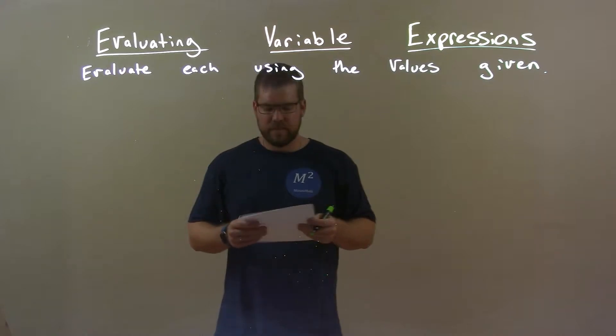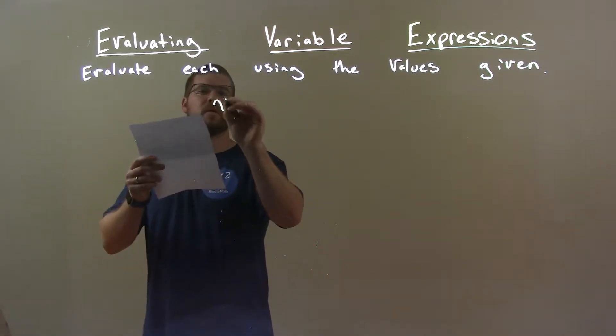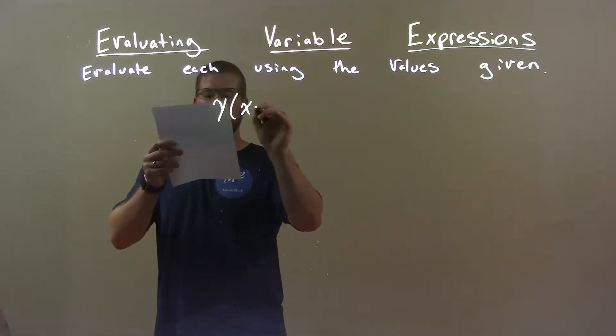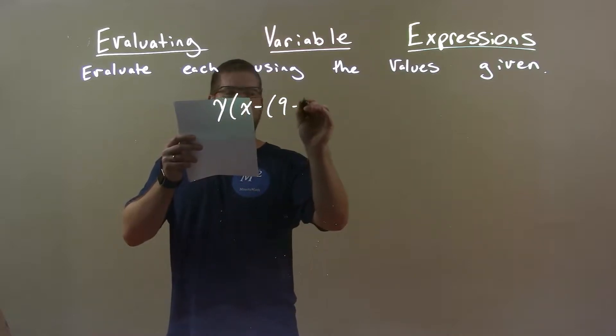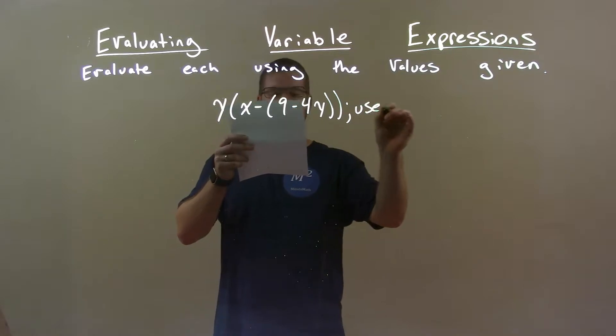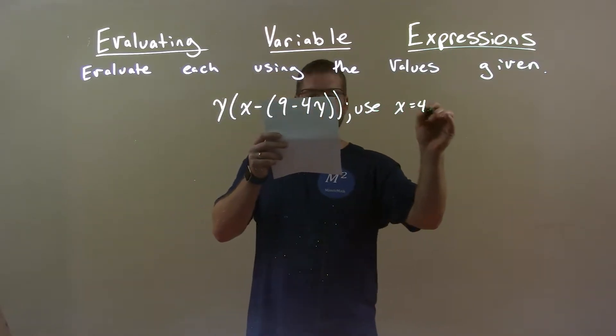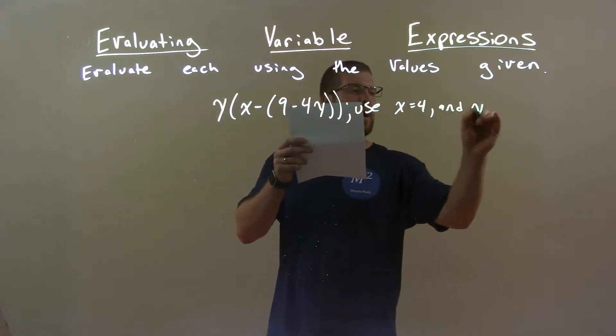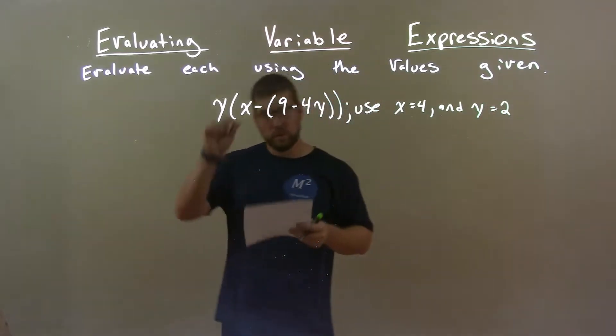So if I was given this expression, y times x minus 9 minus 4y, double parentheses, and we're using x to be 4 and y to be 2.